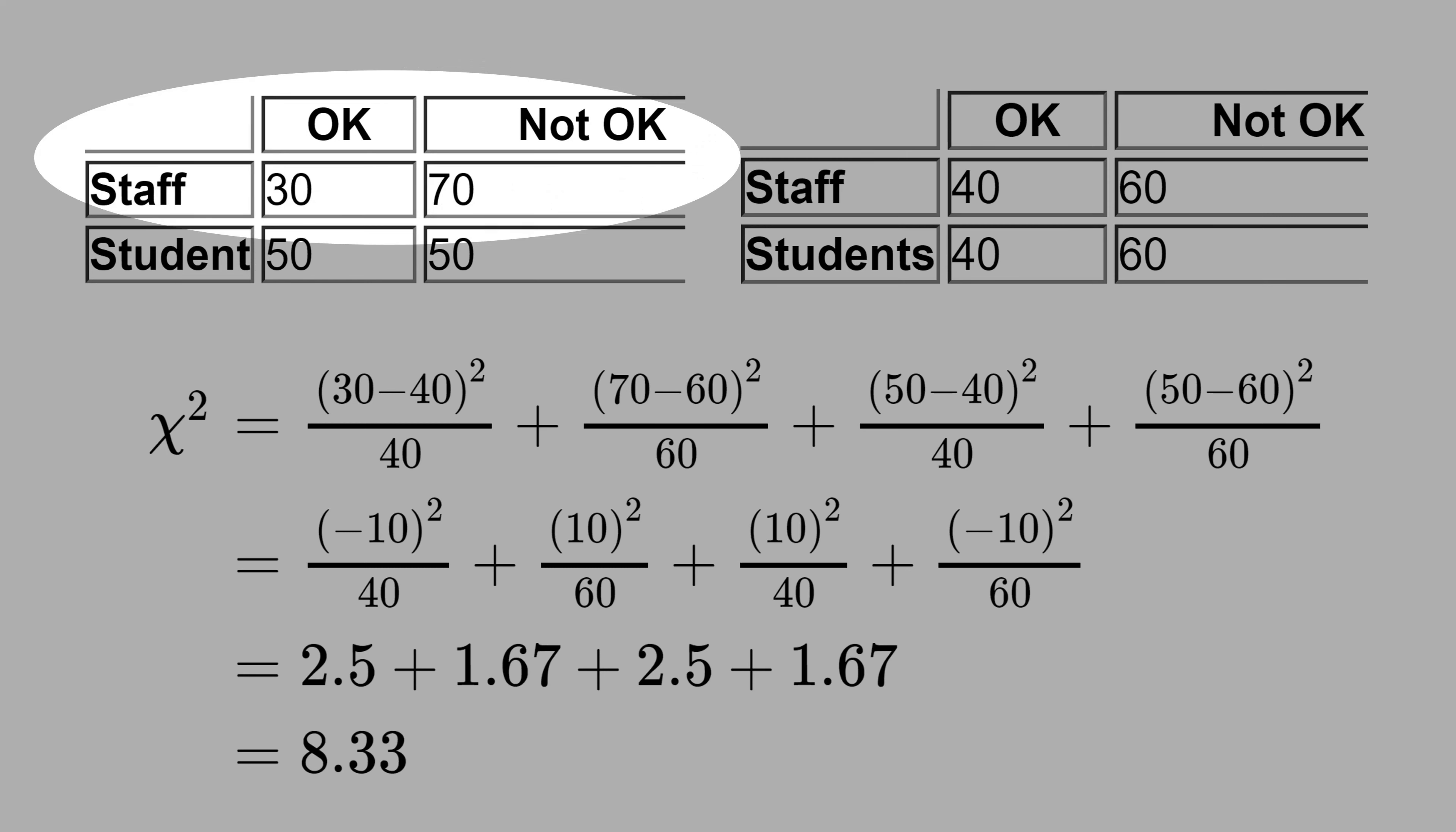We have 100 staff and 30% is OK to use drugs. We also have 100 students and 50% are OK to use drugs. These two categorical variables are associated because we know that students are more likely to use drugs.